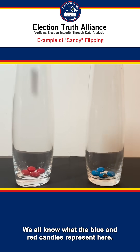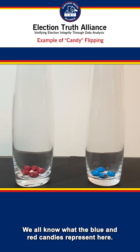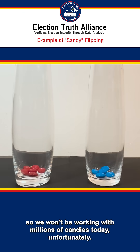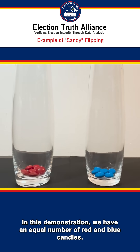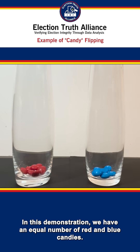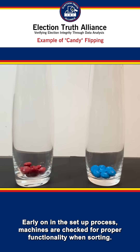We all know what the blue and red candies represent here. This is a concentrated representation, so we won't be working with millions of candies today, unfortunately. In this demonstration, we have an equal number of red and blue candies. This is not intended to demonstrate a preference for red or blue candy. Early on in the setup process, machines are checked for proper functionality when sorting.